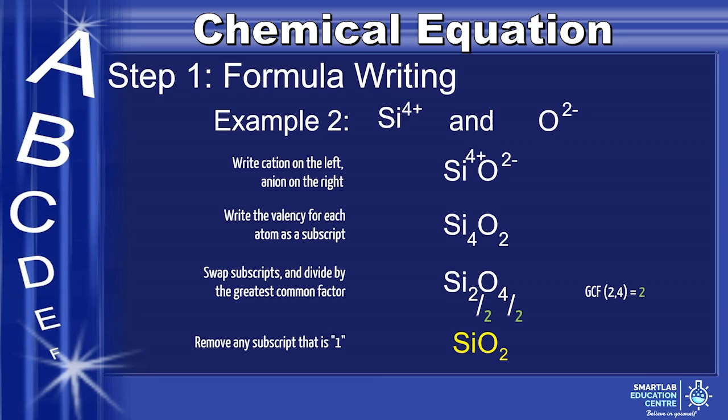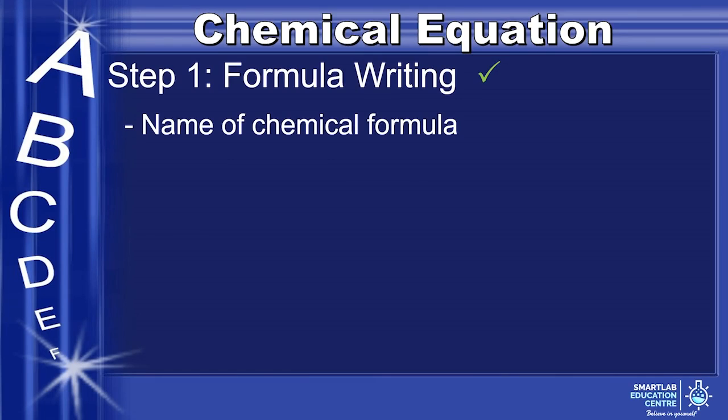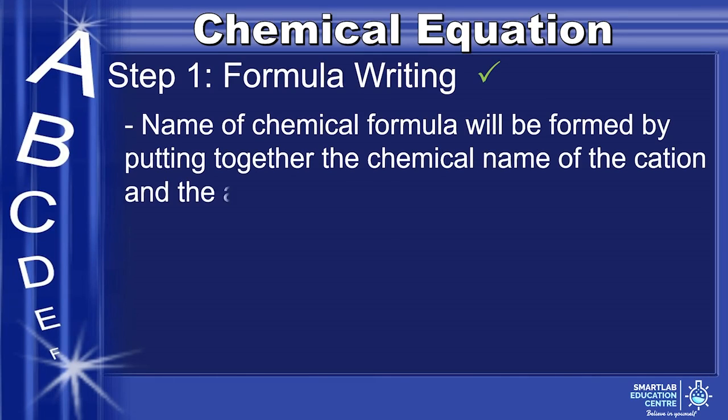Now you have mastered the technique to write the chemical formula. Let's see how to derive the name of the chemical formula. Name of the chemical formula will be formed by putting together the chemical name of the cation and the anion.